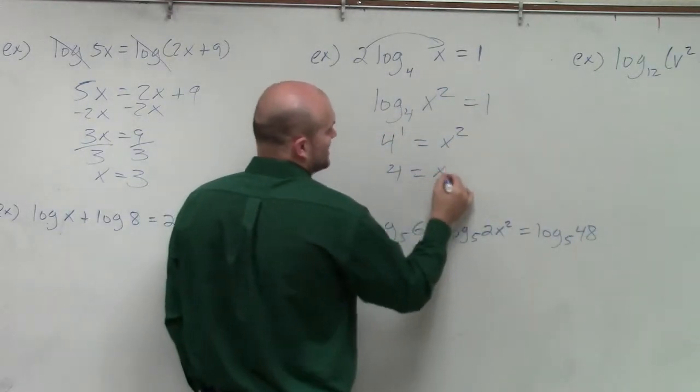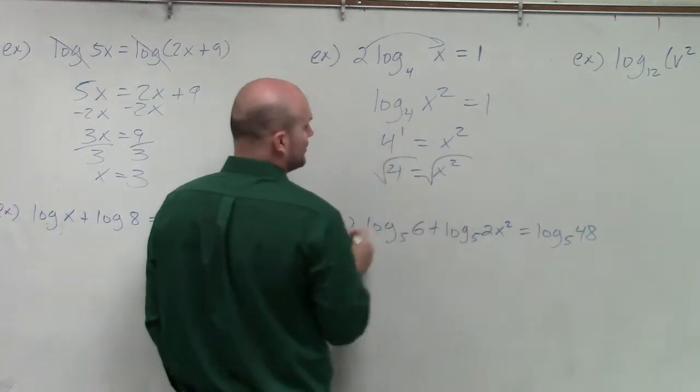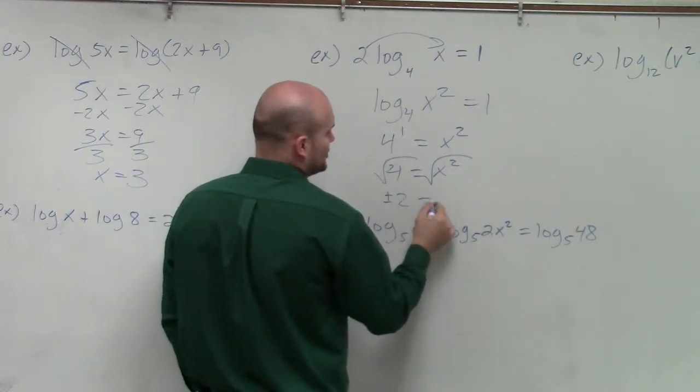So I have 4 equals x squared. Taking the square root of both sides, plus or minus 2 equals x.